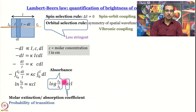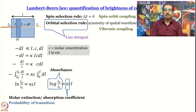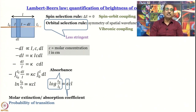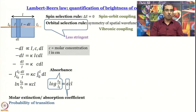We have the equation: absorbance = εCL. So if I measure absorbance at different concentrations, absorbance should increase linearly. If I plot absorbance against concentration, the slope gives me epsilon — it is as simple as that. High absorbance means very little light emerges from the sample, so the sample is nearing opacity. I leave it to you to work out the percentage of light transmitted (I_t/I₀ × 100) when absorbance is 0.01, 0.1, 1, and 10.